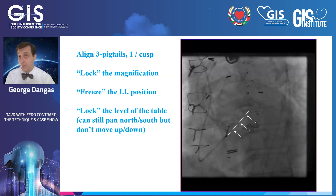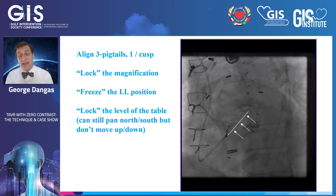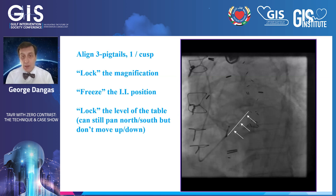Once we align them, we have to move the image intensifier around so that a single plane is touching the bottoms of all three pigtails. And as we know from basic Euclidean geometry, three points define one specific plane — one level.